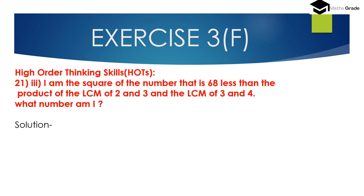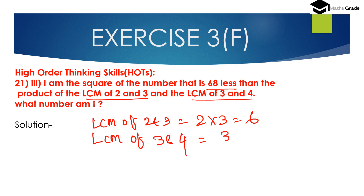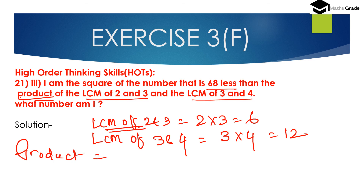Question 21, third bit: 'I am the square of the number that is 68 less than the product of the LCM of 2 and 3 and the LCM of 3 and 4. What number am I?' First, LCM of 2 and 3 is 6. LCM of 3 and 4 is 12. The product of these two LCMs is 6 multiplied by 12, which is 72.